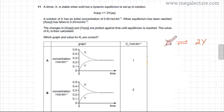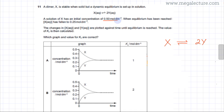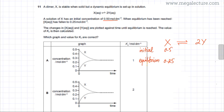The question states that a solution of X has an initial concentration of 0.5 mol per dm³. When equilibrium is reached, the concentration of X has fallen down to 0.25 mol per dm³. So the initial concentration of X is 0.5 and at equilibrium it falls to 0.25 mol per dm³.